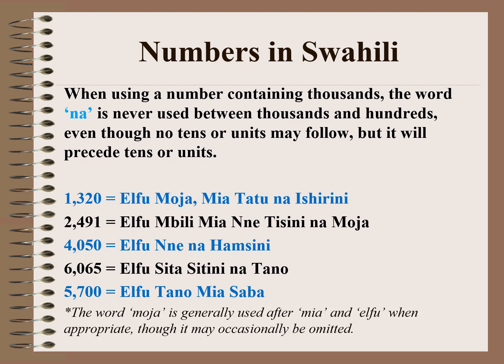The word moja is generally used after mia and elfu when appropriate, though it may occasionally be omitted. For example, one thousand in Kiswahili is elfu moja. When you say just elfu, the sentence is incomplete, but when you say elfu moja, that is when it is completed.